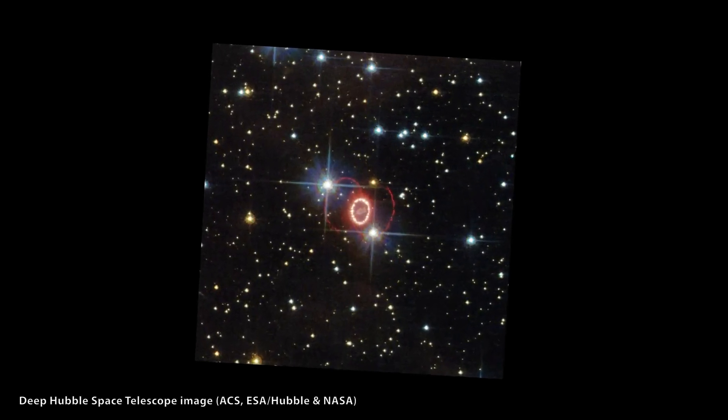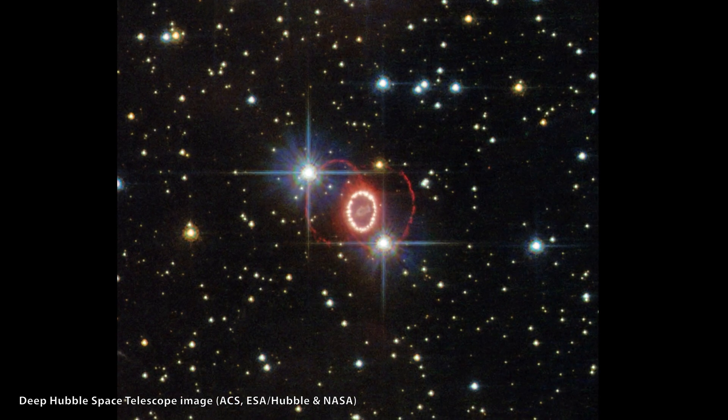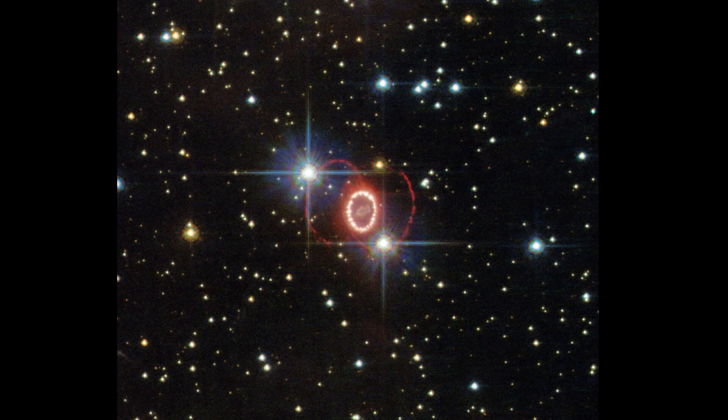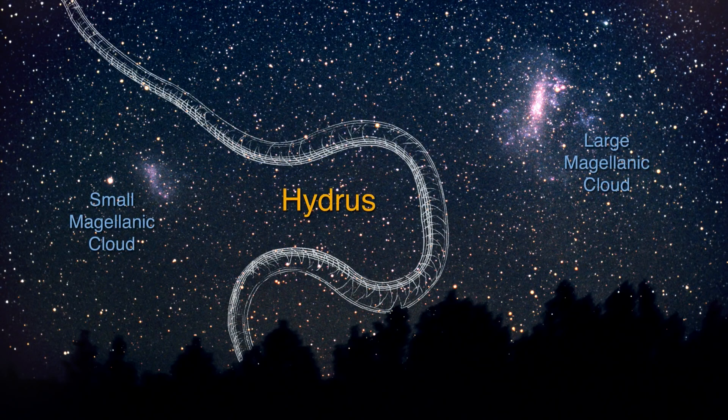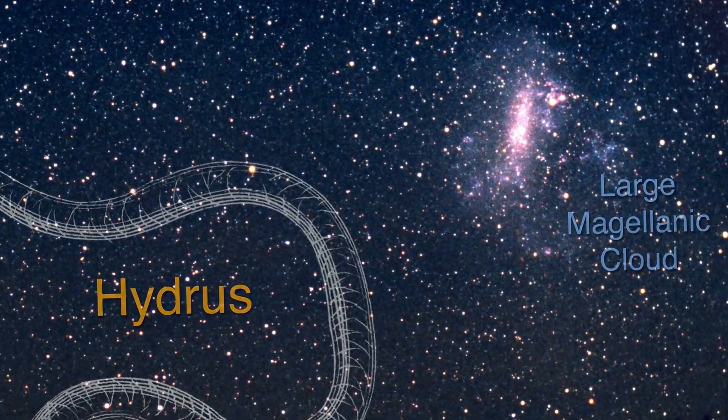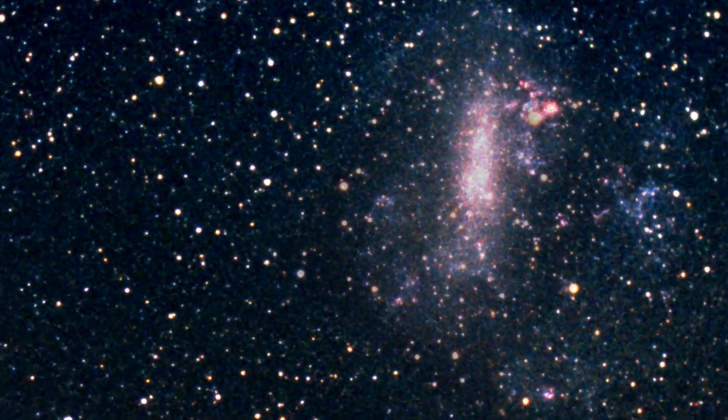Astronomers use the term a rogue supernova to describe this enormous ring-shaped phenomenon that is close to our neighbor galaxy. It has the designation J0624-6948 and is situated in the Milky Way galaxy, known as the Large Magellanic Cloud.